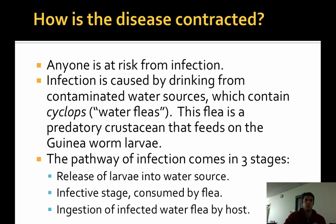So, how is this disease contracted? Pretty much anyone is at risk of infection, as long as they drink water that contains the Cyclops flea, which is a predatory crustacean that feeds on Guinea worm larvae. It is because these third world countries lack the food sources to provide filtered water nationwide, that it is so difficult to eradicate this disease.